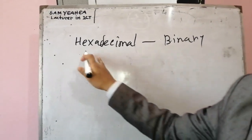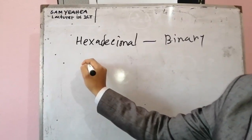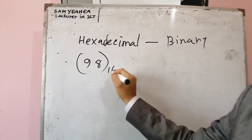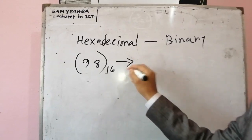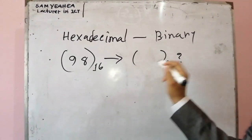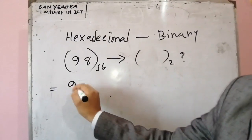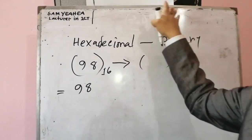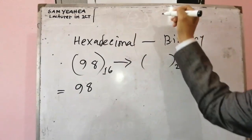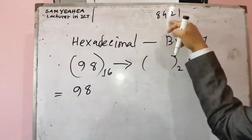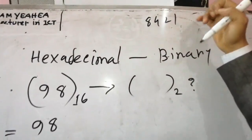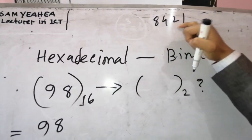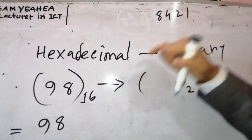In the beginning we had a binary language. A 9-8 is 11, and a 16 is given. That is 8, 4, 2, 1 and 7.